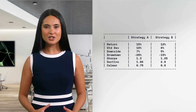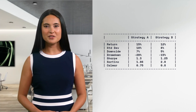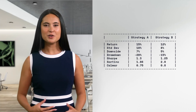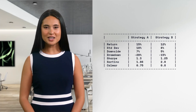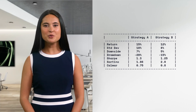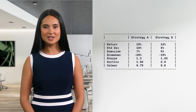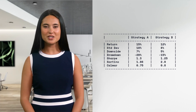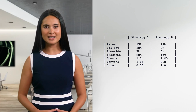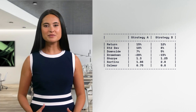Strategy B has an annual return of 12%, a standard deviation of 8%, a downside deviation of 5%, and a maximum drawdown of -15%. The Sharpe ratio for Strategy B is 1.5, the Sortino ratio is 2.0, and the Calmar ratio is 0.8. Although Strategy A has a higher return, Strategy B outperforms it when we account for downside deviation and maximum drawdown, showing lower risk for the return — Strategy B gives more return for each unit of risk.